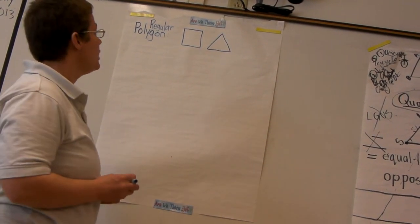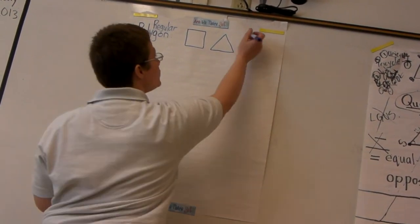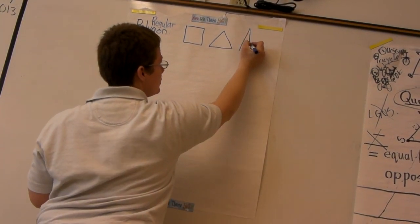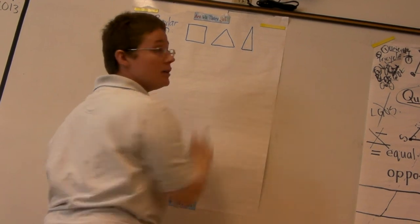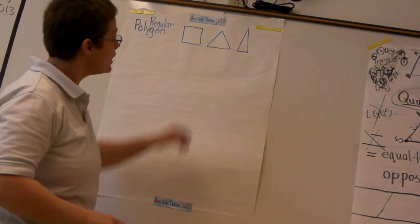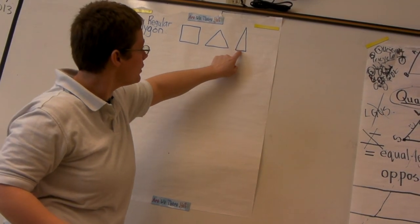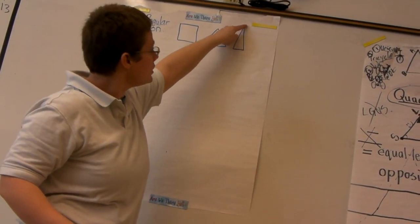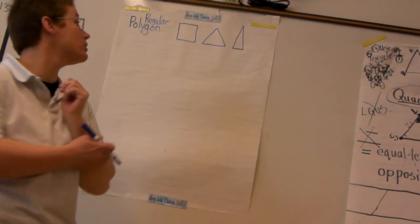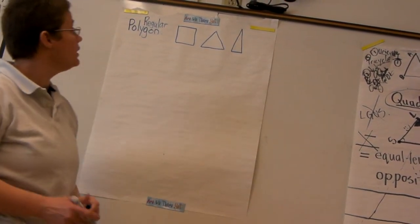How about an isosceles triangle? Would this be a regular polygon? No, very good. It would not be, because two sides are longer than the other. And this is a very small acute angle, and these are also acute but they're a little bit bigger than this one.